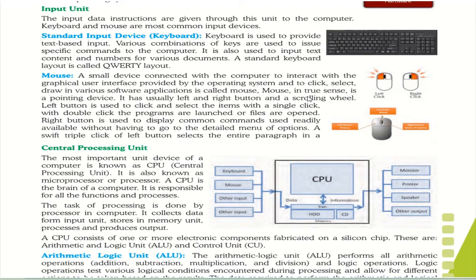Next is the central processing unit — the main unit of your system. The CPU is known as the brain of the computer; it is responsible for all functions and processes. Whatever input is given, that task is processed, and after processing its duty is to give the desired output to the output unit. From keyboard, mouse, and other input units, data goes to your CPU, is stored in hard disk, CD, or RAM, and from there the desired output goes to the output unit, which could be monitor, printer, or speaker.